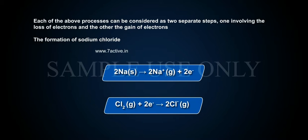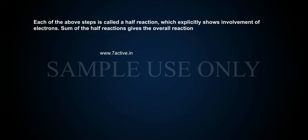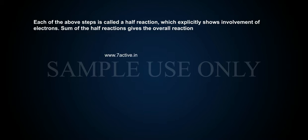Cl₂(g) + 2e⁻ → 2Cl⁻(g). Each of the above steps is called a half reaction, which explicitly shows the involvement of electrons. The sum of the half reactions gives the overall reaction.